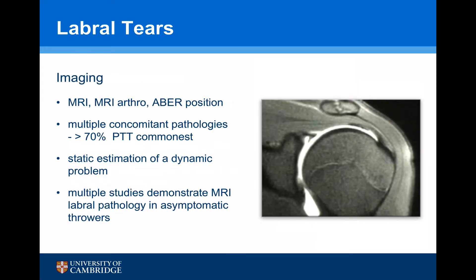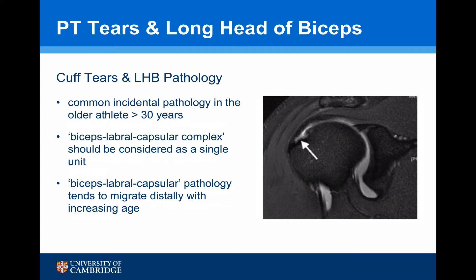Labral tears are best assessed by an MRI scan, or better, an MRI arthrogram, particularly in the ABER position — so in abduction and external rotation. However, it's important to remember that there are multiple concomitant pathologies noted with labral tears. One study showed over 70% of patients had a concomitant pathology, most commonly a posterior partial thickness cuff tear. It's important to remember that an MRI scan is a static estimation of a dynamic problem, and many studies have shown that MRI labral pathology is present in asymptomatic throwers' shoulders. With regards to cuff tears and long head biceps pathology, these are common incidental pathological findings in athletes older than 30 years. The biceps-labral-capsule complex should probably be considered as a single unit rather than individual components, and biceps-labral-capsule pathology tends to migrate distally with increasing age, so most problems tend to migrate down the long head of biceps.